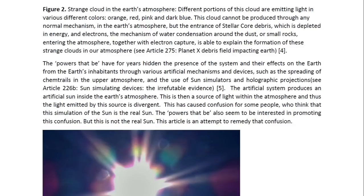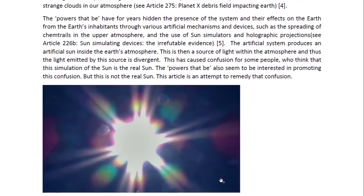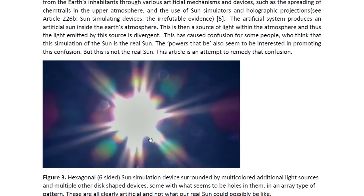The artificial system produces an artificial sun inside the Earth's atmosphere. This is then a source of light within the atmosphere and thus the light emitted by the source is divergent. This has caused confusion for some people who think that this simulation of the sun is the real sun. The powers that be also seem to be interested in promoting this confusion. But this is not the real sun. And this article is an attempt to remedy some of that confusion. So here we see a device which is obviously not the sun, but yet it's bright. It's in the Earth's air. It can be seen in the Earth's sky. And most people would therefore associate with the sun. But if you look at it, you can see it's not the sun. It is, first of all, hexagonal. It has six sides. It has double or triple beams at each of these sides. So this cannot possibly be the sun. This is obviously an artificial device.